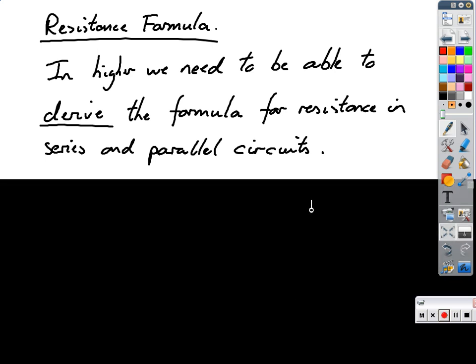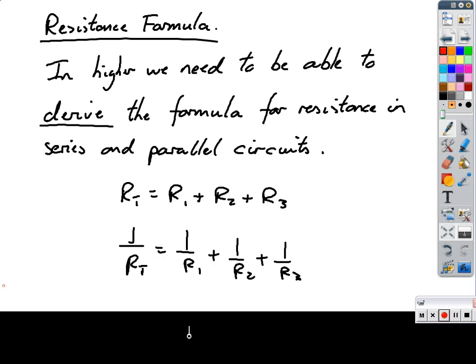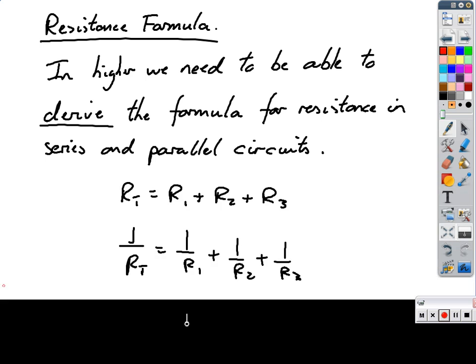In higher, we need to be able to derive the formula for resistance in series and parallel circuits. This doesn't mean just look at the formula book and say this is what they are. It means how do we get that formula from the formula book? The two formulas we need to be able to derive are the resistance in a series circuit, which is RT equals R1 plus R2 plus R3, and resistance in parallel circuit, which is 1 over RT equals 1 over R1 plus 1 over R2 plus 1 over R3.